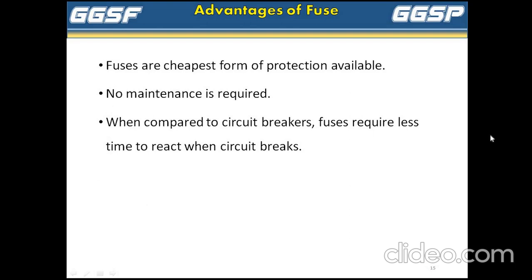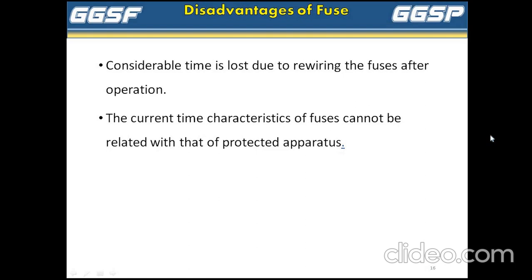Advantages of fuse: fuses are the cheapest form of protection available. No maintenance is required. Compared to a circuit breaker, a fuse requires less time to react when the circuit breaks. Disadvantage of fuse: considerable time is lost due to rewiring the fuses after operation. The current-time characteristics of fuses cannot be related with that of the protected equipment. This was all about fuse, types of fuses, and their applications.